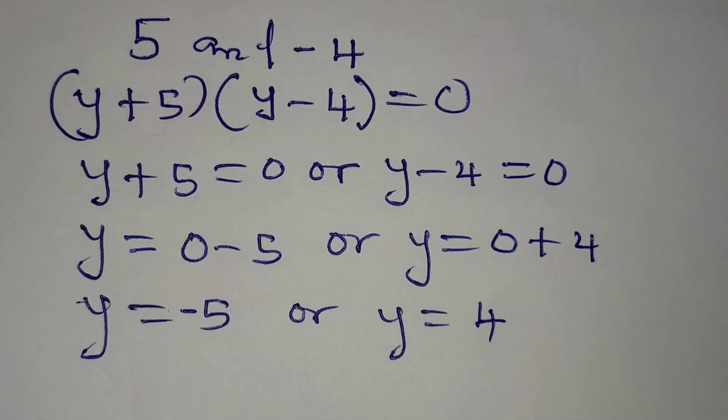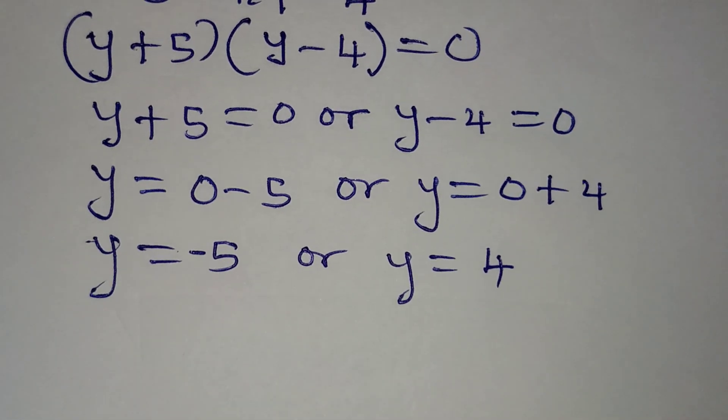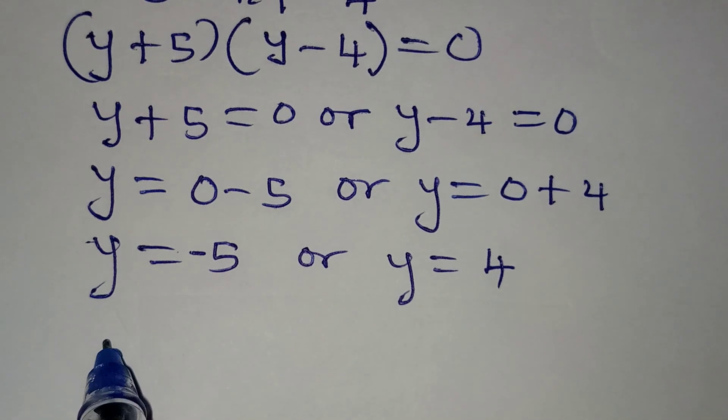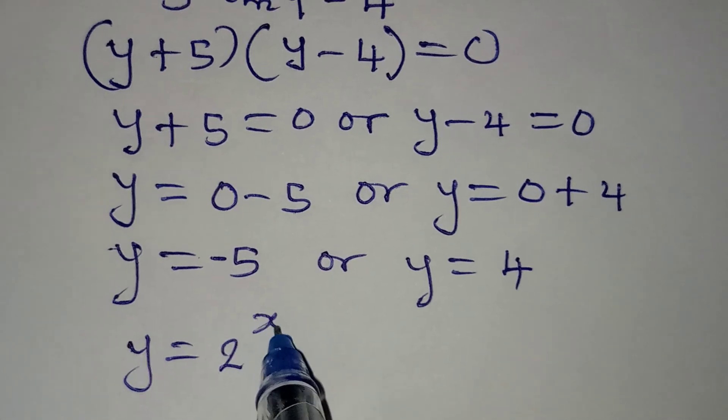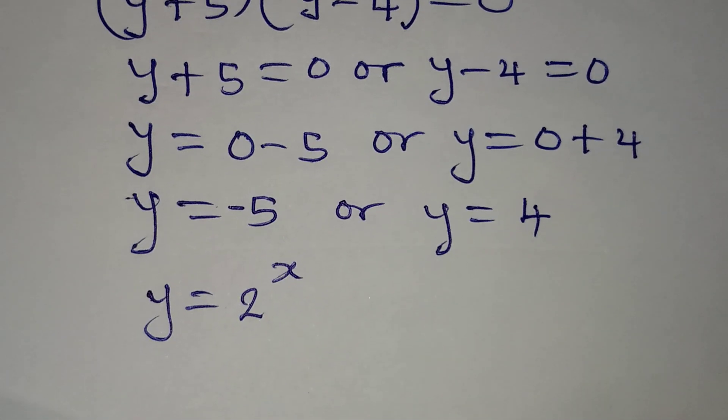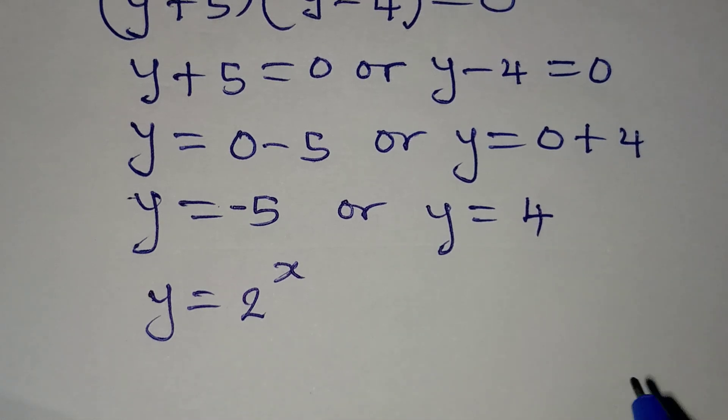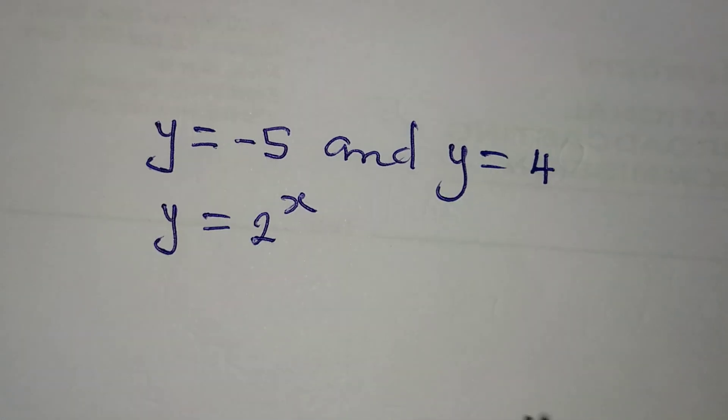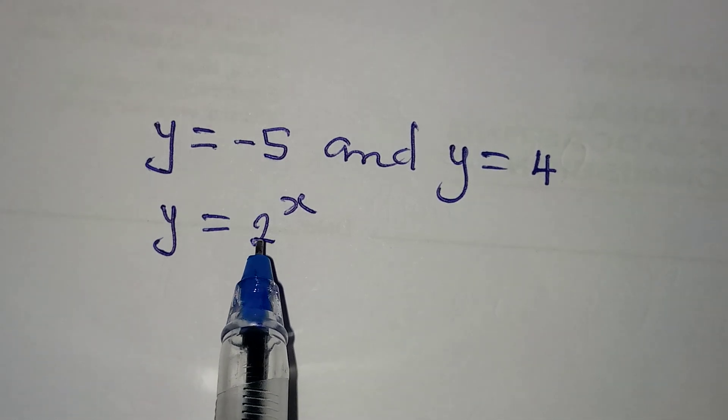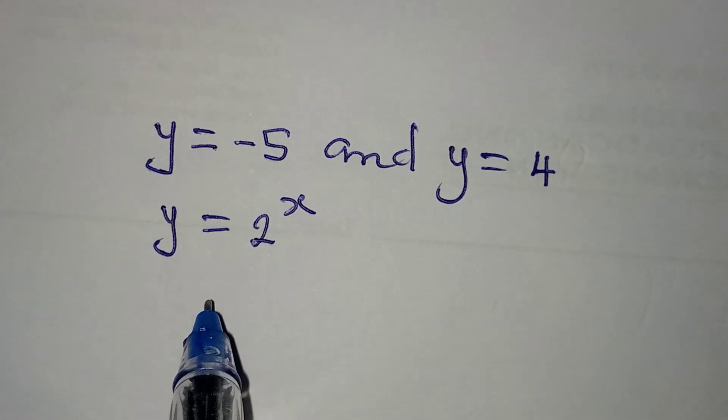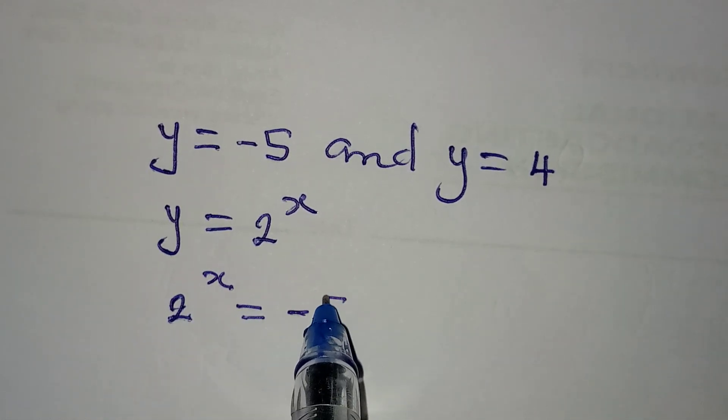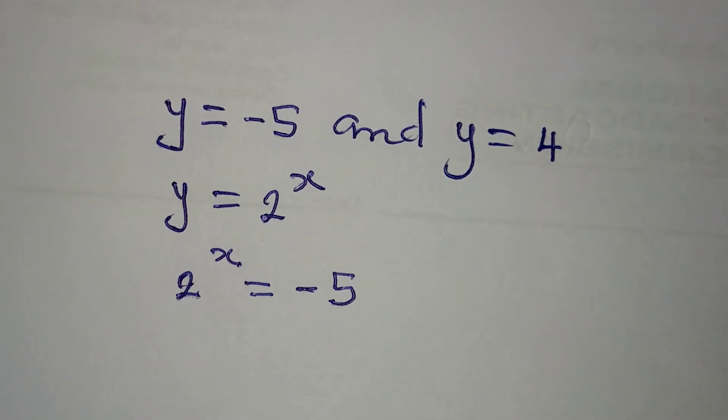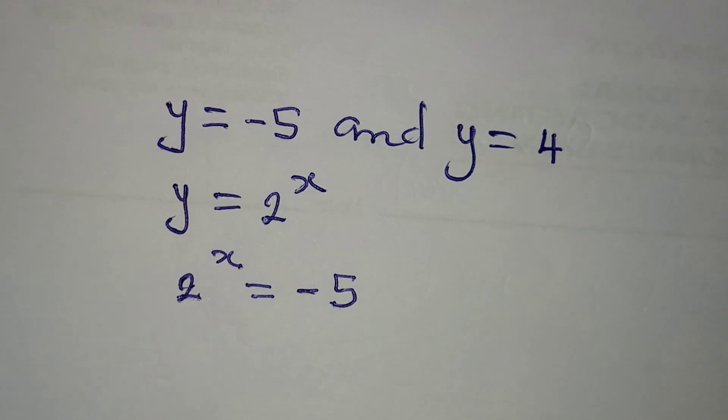But remember that we were not looking for y initially. We are looking for x, and we said that y is equal to 2 to the power of x. So if that be the case, then let's continue. Since we have y to be equal to 2 to the power of x, then it means that 2 to the power of x now will be equal to minus 5. And then from here, how do we get the value of x?